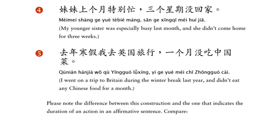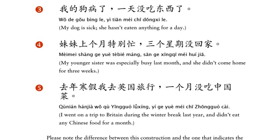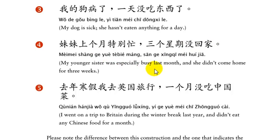In these last two examples, they cut off the 了 because it's optional. Now, 妹妹上个月特别忙，三个星期没回家. My younger sister was especially busy last month and she didn't come home for three weeks. Pay attention here — when talking about something you haven't done, like I haven't been skiing in two years: 我两年没下雪了.